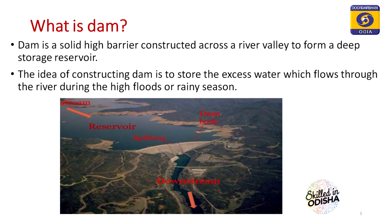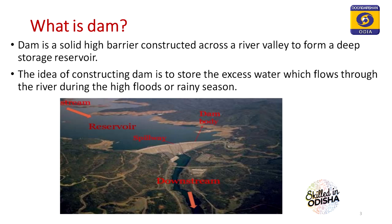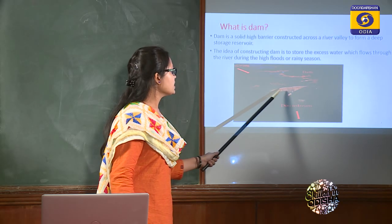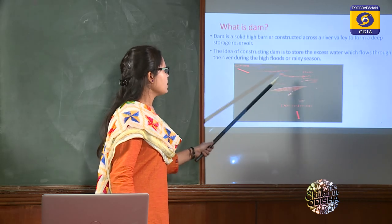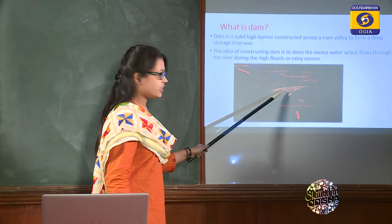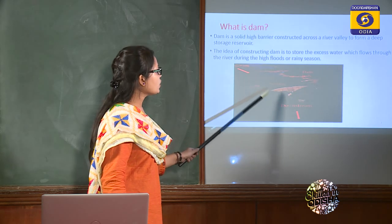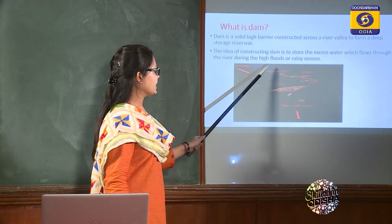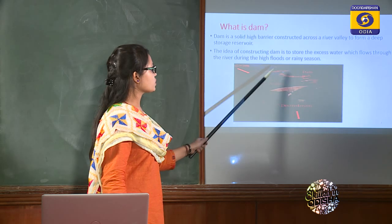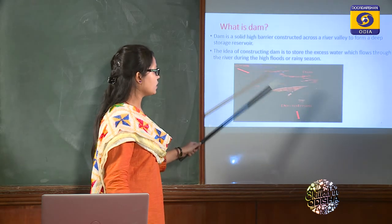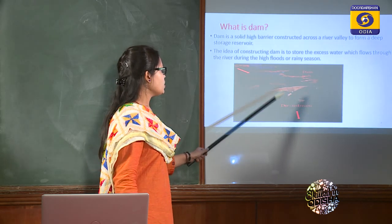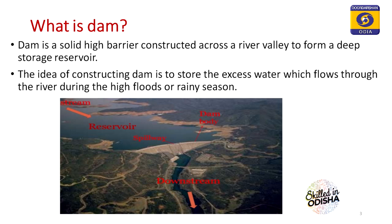As you can see in the picture, there is a river in a valley — the low area between two hills or mountains. A dam is constructed across this valley. After constructing this barrier, water will be stored on one side, which is called the upstream side of the dam. The other side is called the downstream side, and the storage reservoir is formed here.